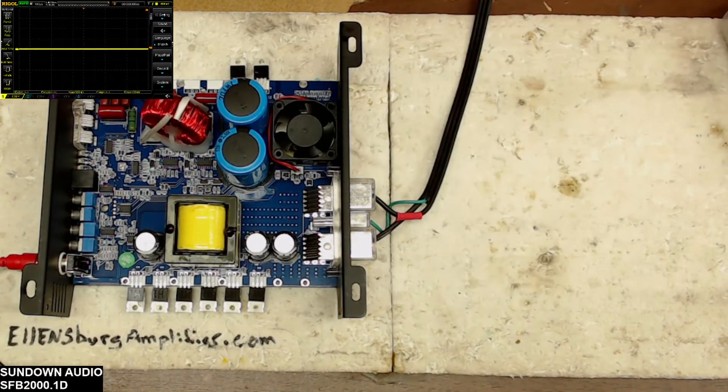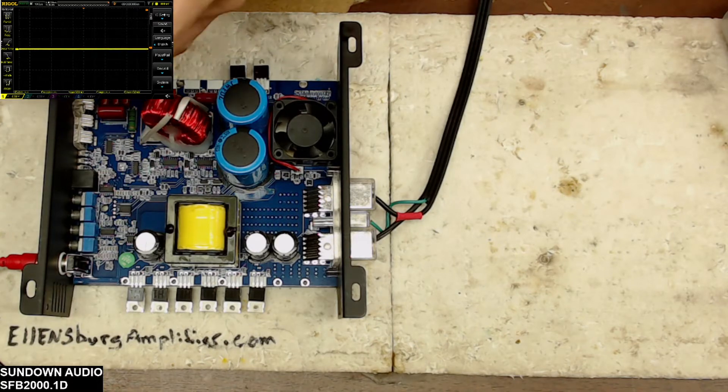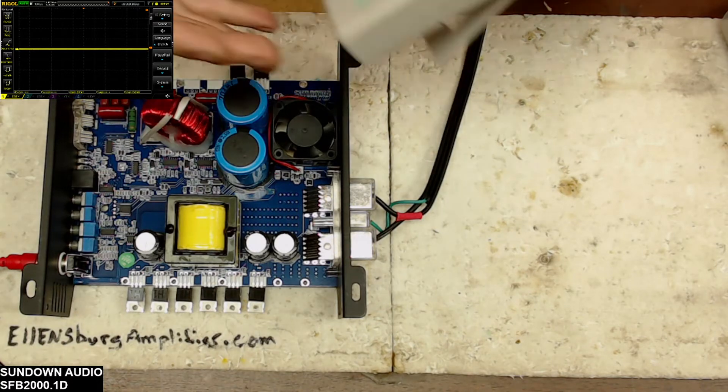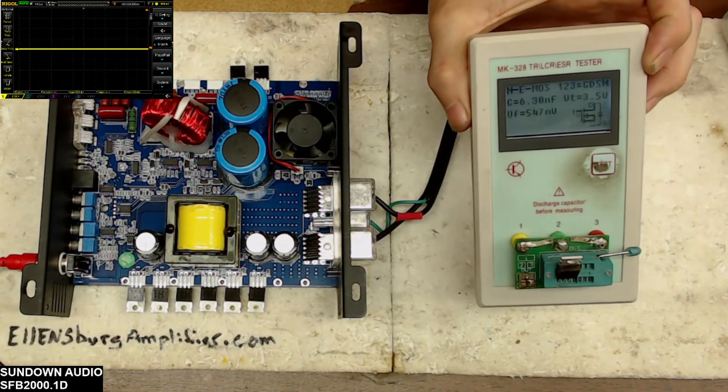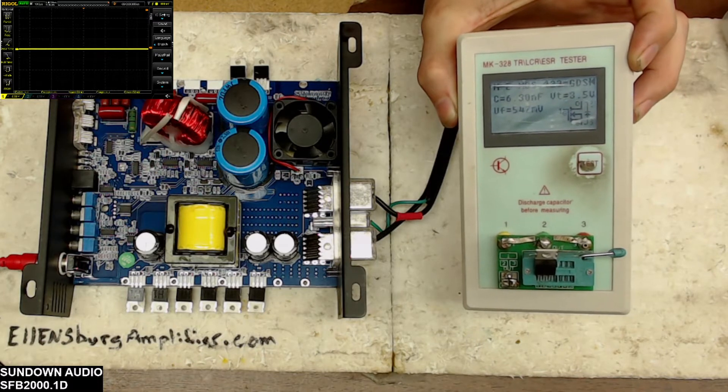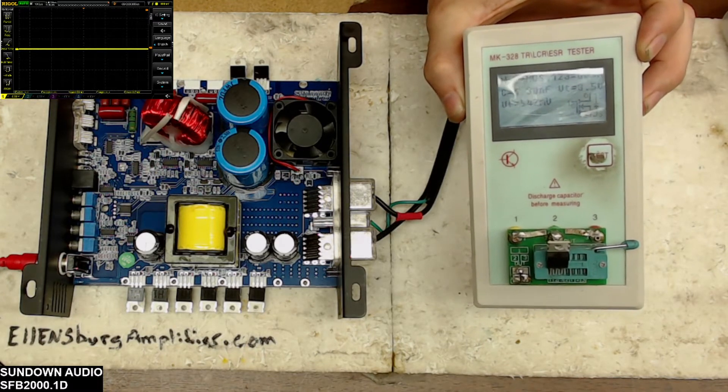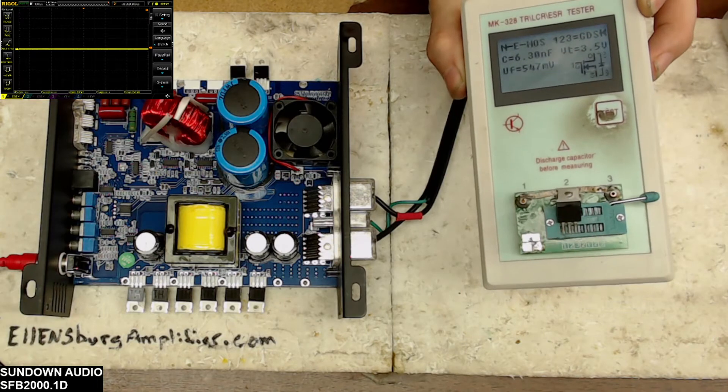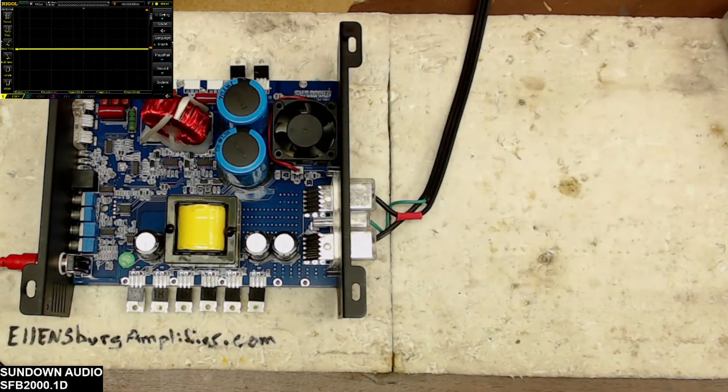What I'm going to do is run a test of the original output transistor. You'll see that the capacitance on that is about 6.3 nanofarads at 3.5 volts. So this is a general rough way of kind of matching what you have - 6.3 nanofarads at 3.5 volts on the threshold there.